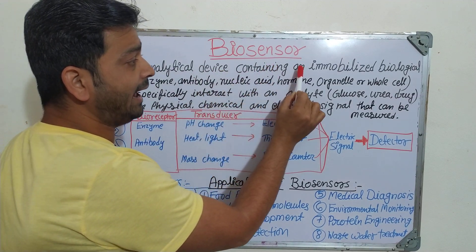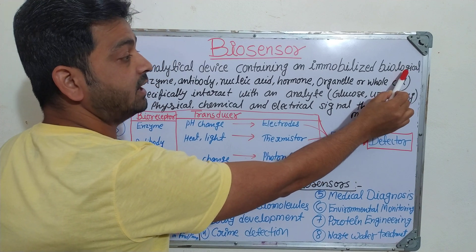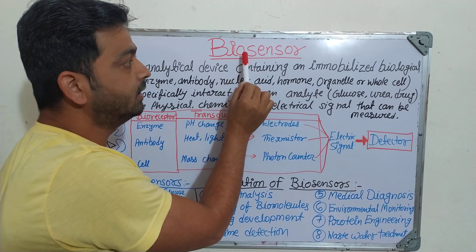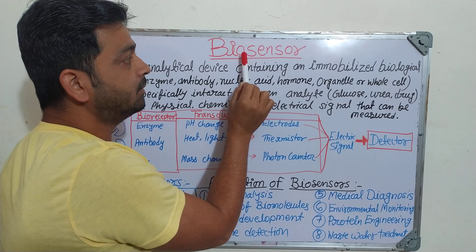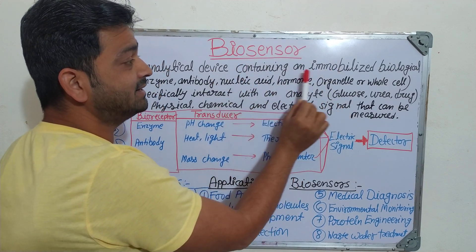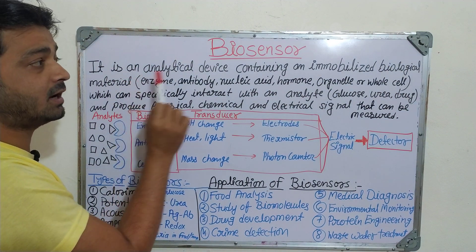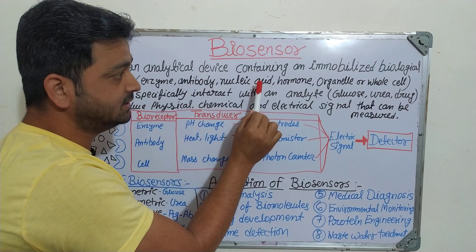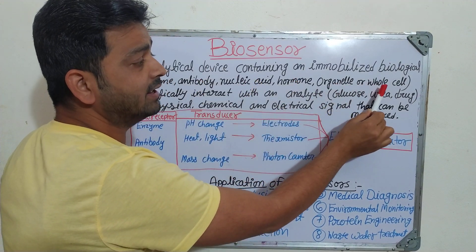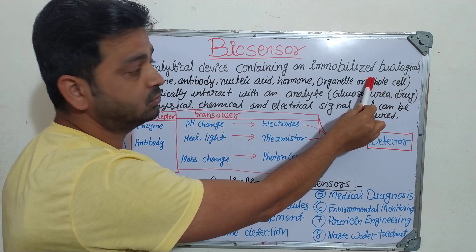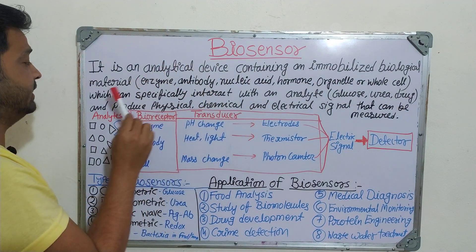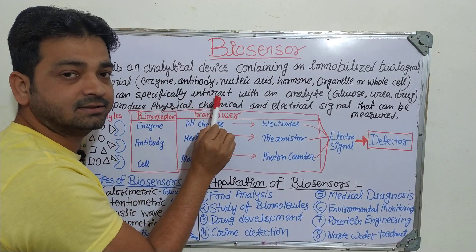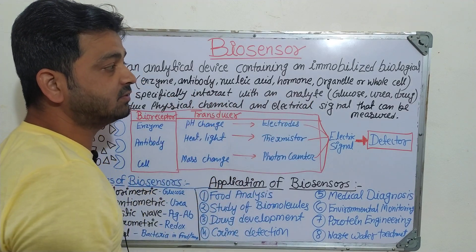A biosensor is an analytical device containing immobilized biological materials. As the name indicates, 'bio' refers to living organisms, so in a biosensor we use biological material. Those biological materials can include enzymes, antibodies, nucleic acids, hormones, organelles, or even whole cells. These biological materials can specifically interact with an analyte.